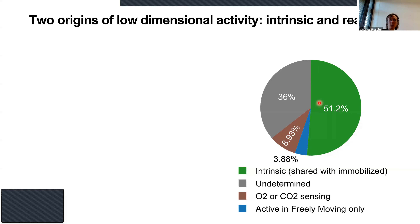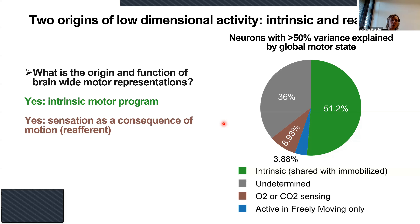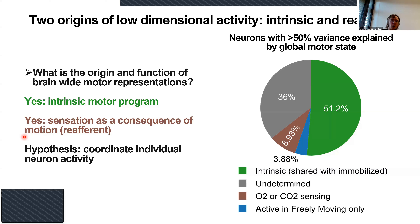Loosely speaking, about 50% of neurons show the same activity between immobilized and freely moving situations, but almost 10% of neurons are just sensing the consequences of the behavioral state change through the environment — highly correlated, but a completely different causal pathway.